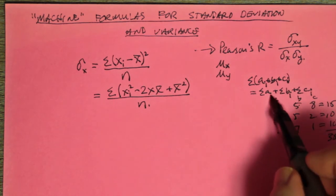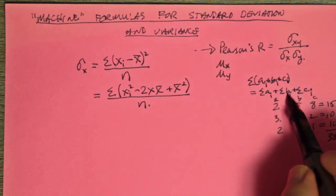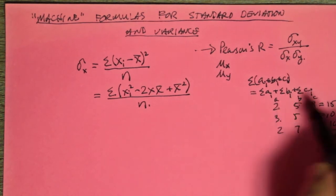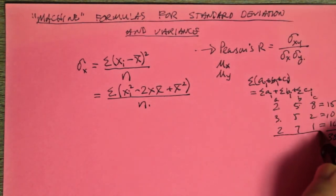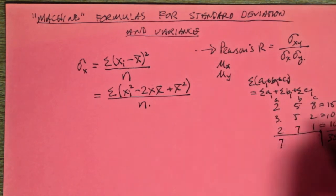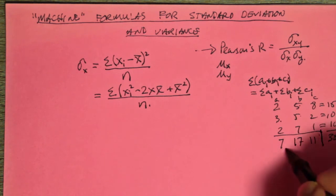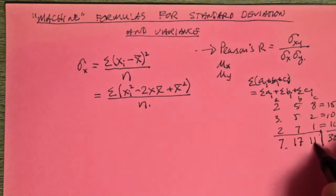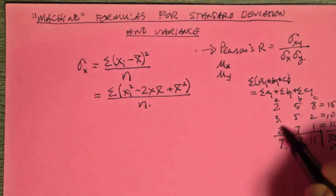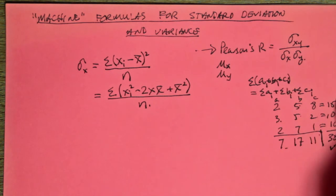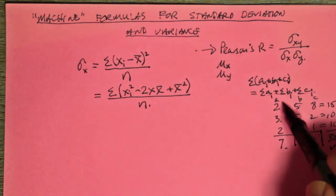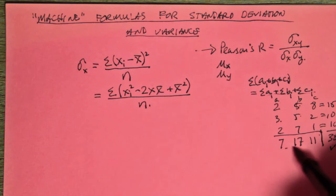What if I did it this way — add only the A's, add only the B's, add only the C's, and then add the results? Would I still get 35? So: 2 and 3 is 5, and 2 is 7. 5 and 5 is 10, and 7 is 17. 8 and 2 is 10, and 1 is 11. 7 and 17 is 24; 24 plus 11 is 35. So it adds both ways.